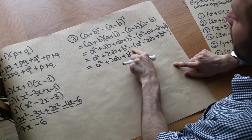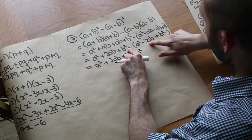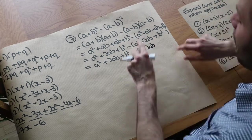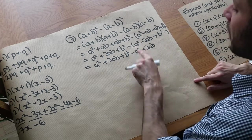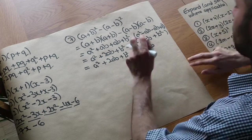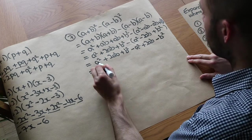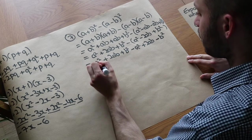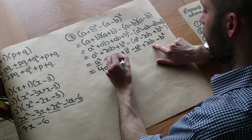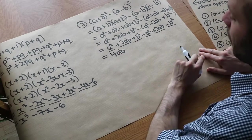Now we subtract each thing in the bracket. We're subtracting a squared, subtracting minus 2ab — but subtracting a negative means we add, so it becomes plus 2ab. And subtracting b squared gives minus b squared. That's the reason we need those brackets. Collecting like terms: a squared minus a squared cancels. 2ab plus 2ab is plus 4ab. And b squared minus b squared cancels. So the whole thing simplifies to just 4ab.